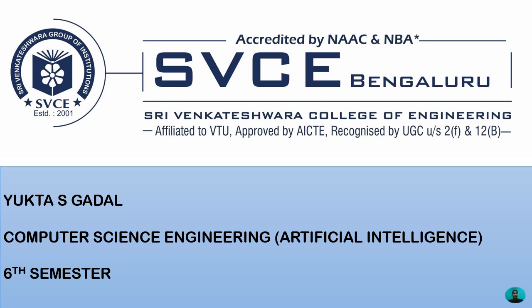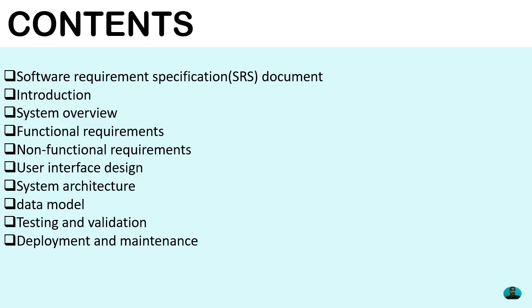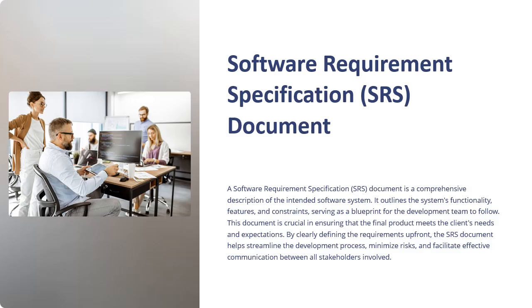Hello everyone, welcome back to my channel. Today we're going to talk about the software requirement specification document. The content covered includes: introduction, system overview, functional requirements, non-functional requirements, user interface design, system architecture, data model, testing and validation, and deployment and maintenance.